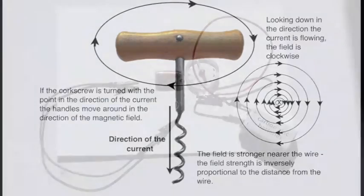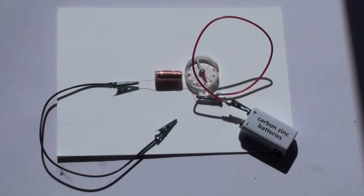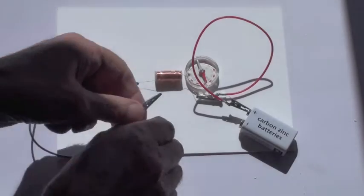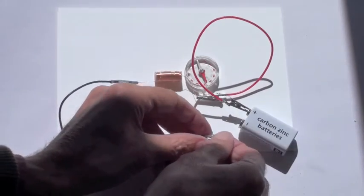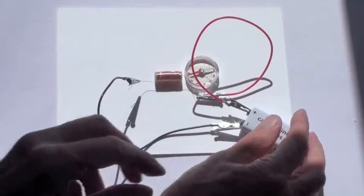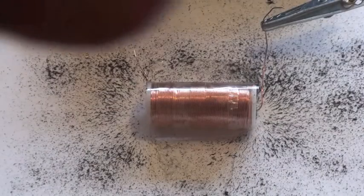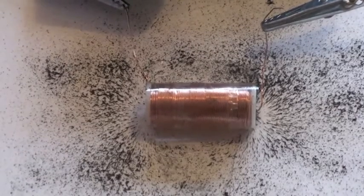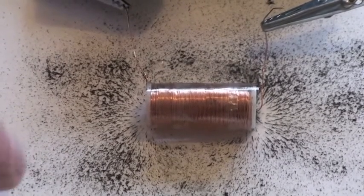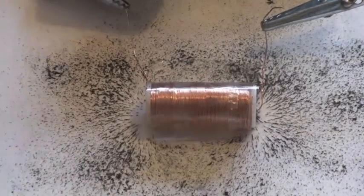A current flowing through a coil of many turns produces a much more obvious magnetic field. As the battery here is connected, the compass moves around much more quickly and immediately than it did before, and the iron filings fall into a very obvious pattern. We'll examine the shape of this magnetic field just a bit more carefully.